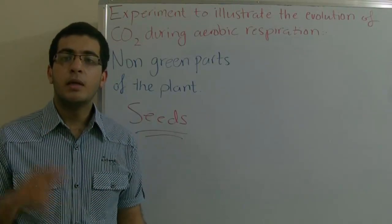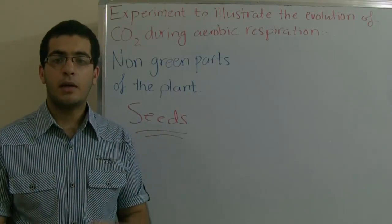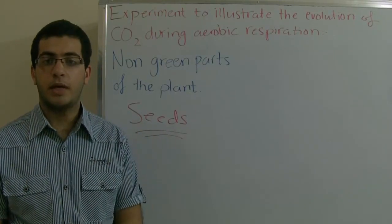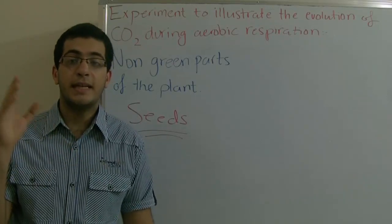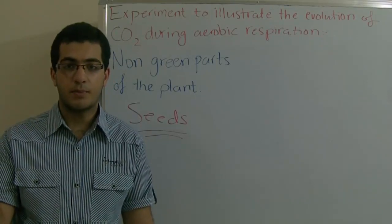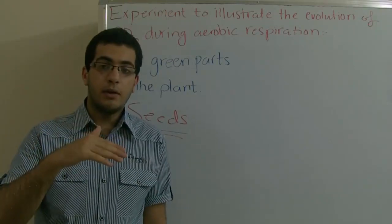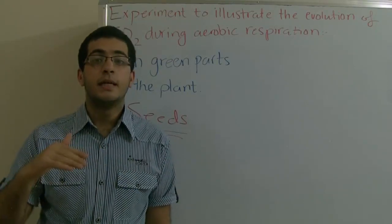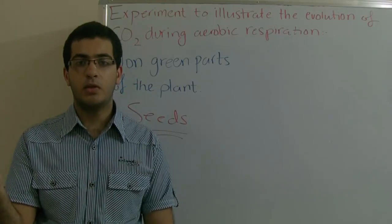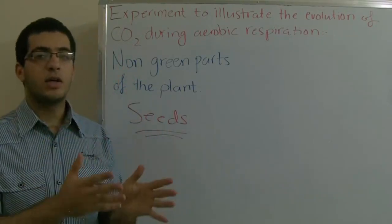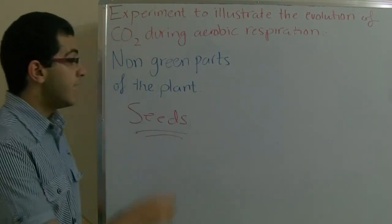The third apparatus contains germinating seeds. They respire and produce carbon dioxide. And because the potassium hydroxide is able to absorb the produced carbon dioxide, the level of potassium hydroxide rises up as it absorbs the carbon dioxide, so the level rises and the change takes place.